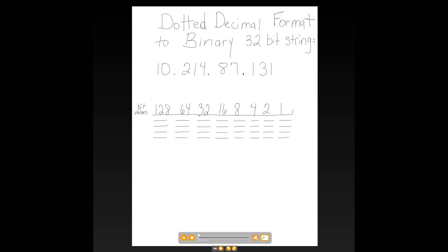We've learned how to go from a 32-bit binary IP address and convert it into a dotted decimal format. Now we are going to take an IP address that is written in dotted decimal format and convert it back into a 32-bit binary string IP address.